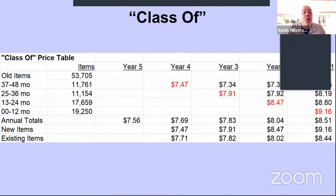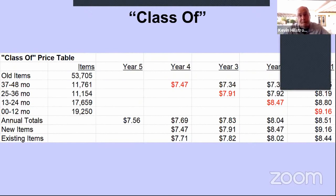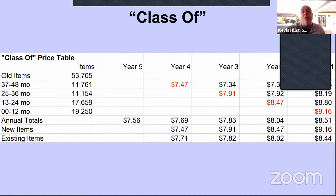Looking at the price of new items — labeled in red: new items introduced three to four years ago were $7.47 on average, then $7.91 the following year, $8.47 the year after, and $9.16 most recently. Their product team is constantly trying to raise prices and customers are rebelling against it. Fortunately, even though new items this year are at $9.16, customers are starting to like what's being offered, suggesting the business is starting to turn a corner.